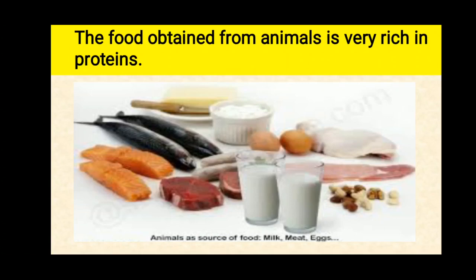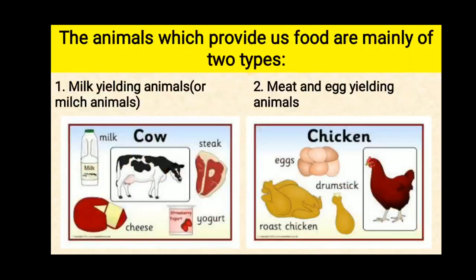Animal food however contains minerals and vitamins. The food obtained from animals is more expensive than that obtained from plant sources. The animals which provide us food are mainly of two types.